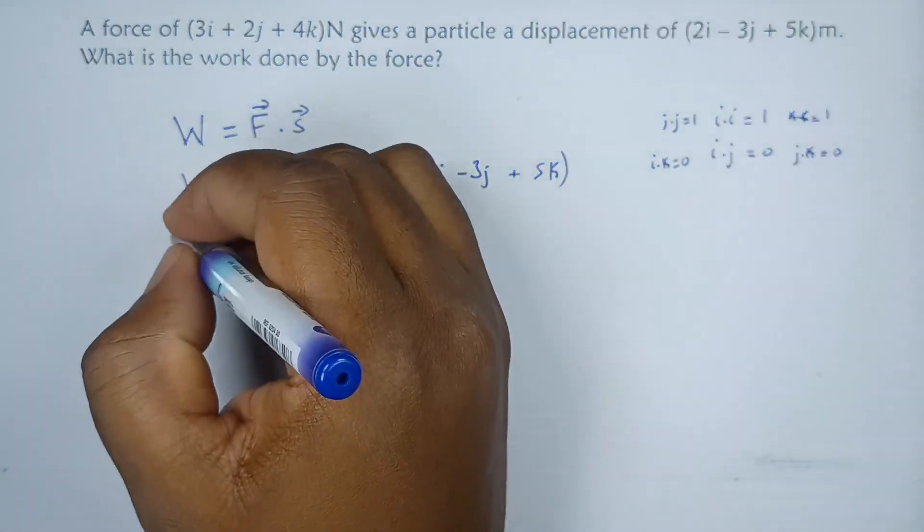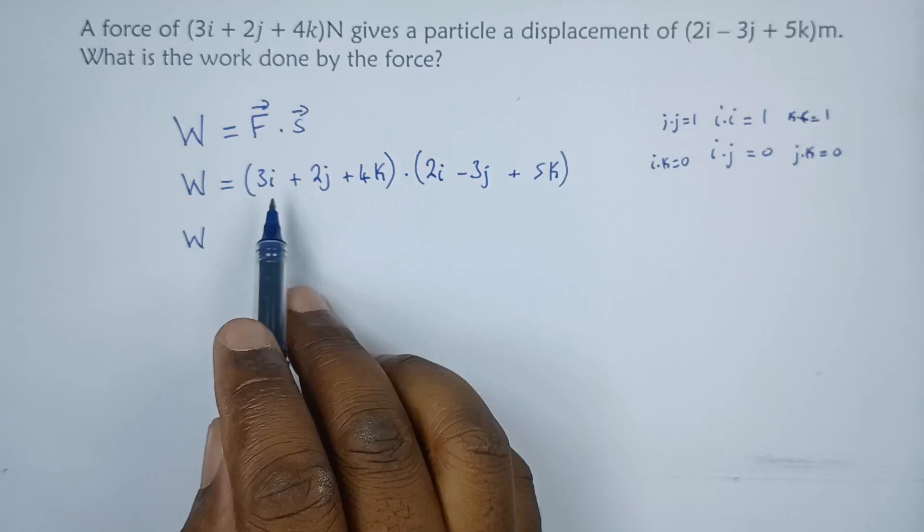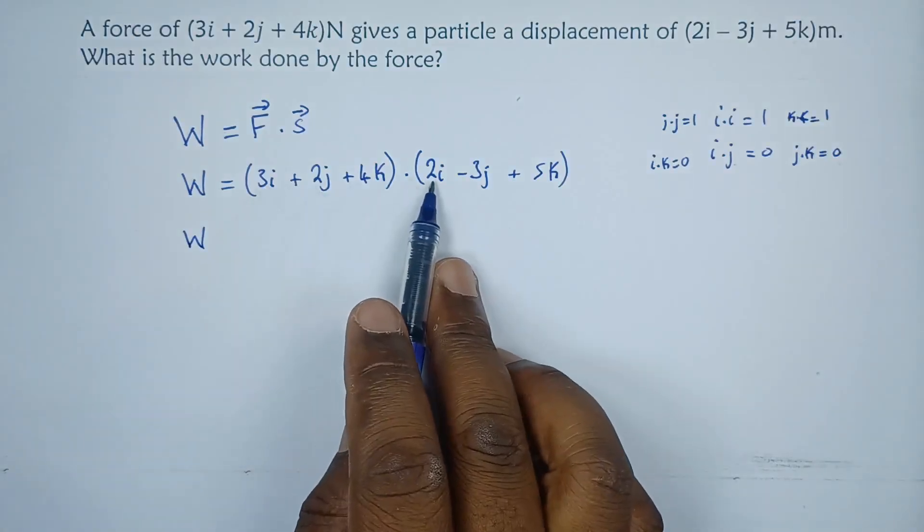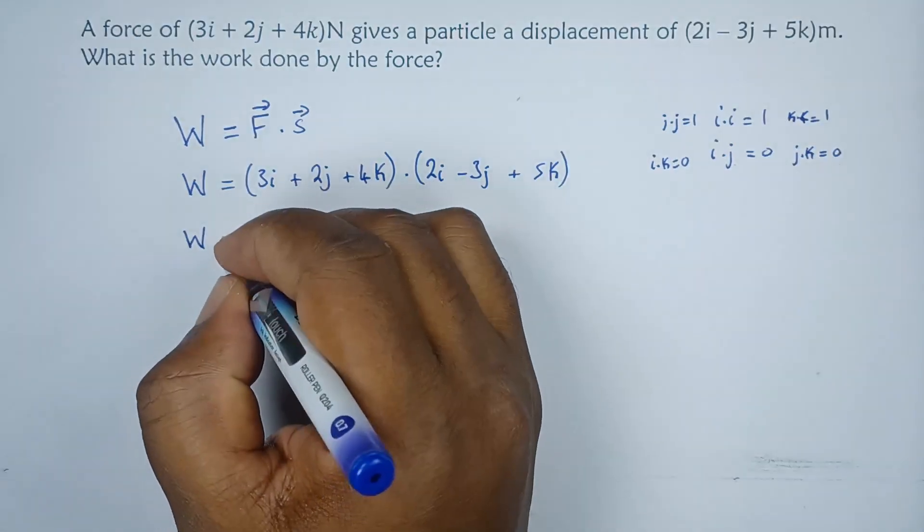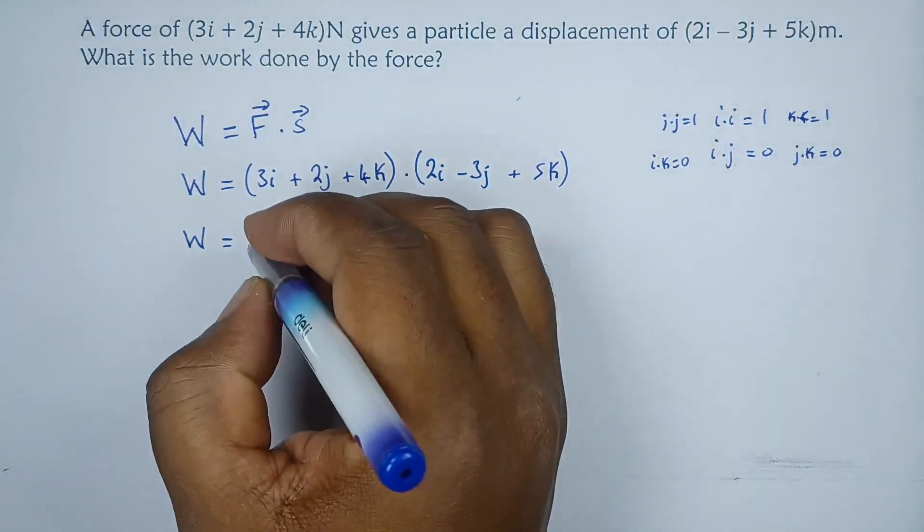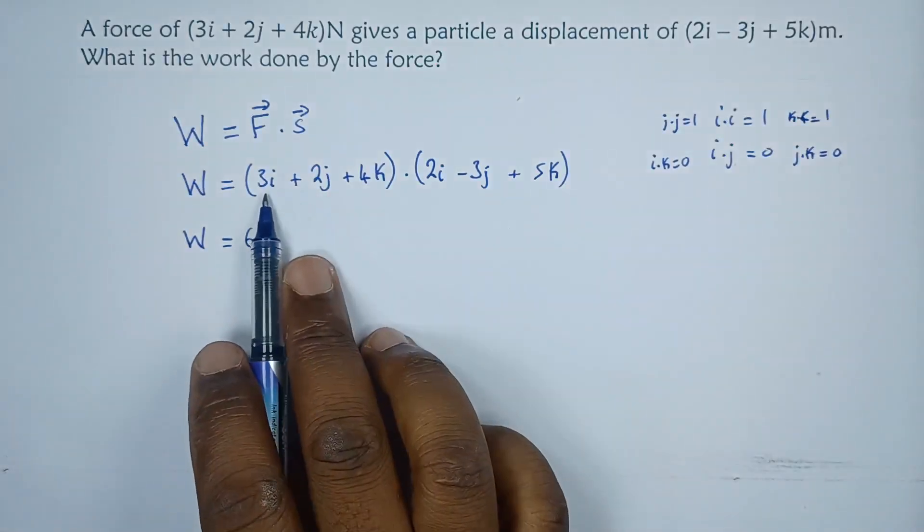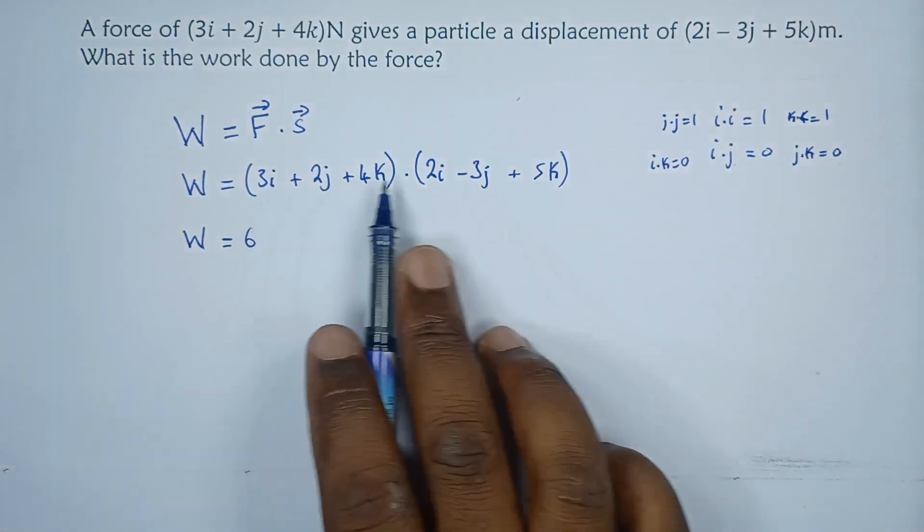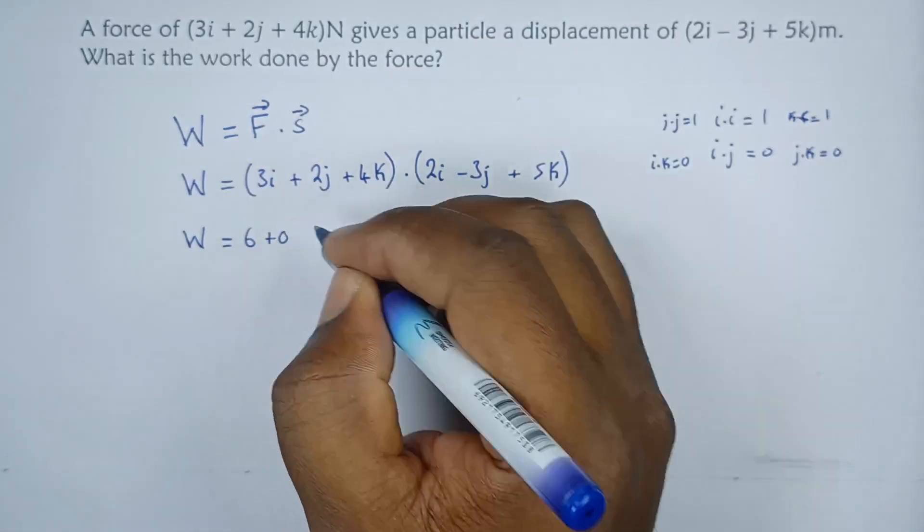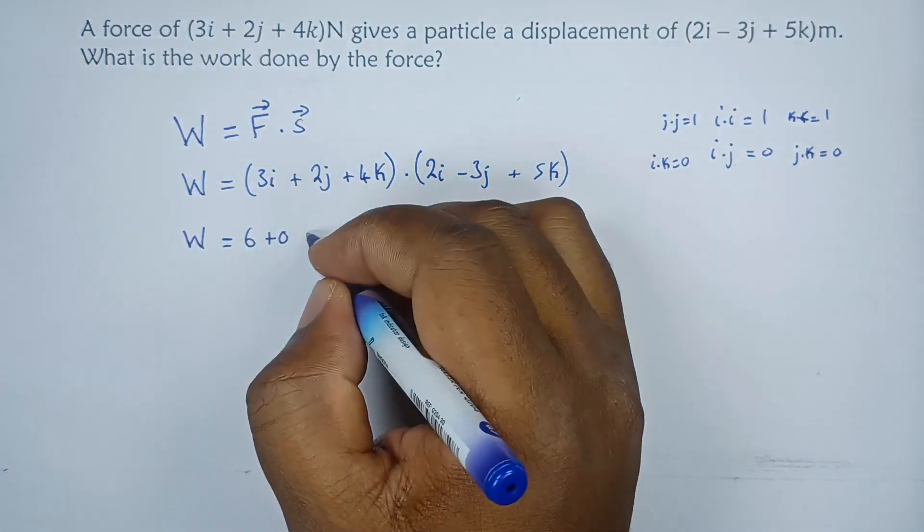So let's see what we obtain. 3i times 2i, we get 6i squared, but remember i squared is 1 so it's just 6. Then 3i times the j we get 0, and i times k we get 0.